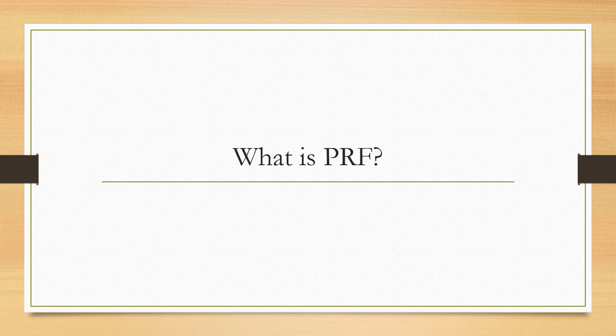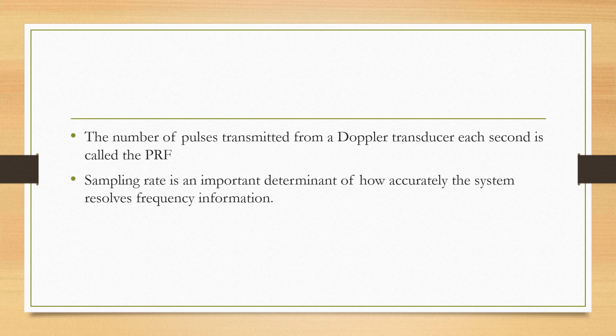What is Pulse Repetition Frequency? The number of pulses transmitted from a Doppler transducer each second is called Pulse Repetition Frequency. This is equal to the sampling rate. Sampling rate is an important determinant of how accurately the system resolves the frequency information.